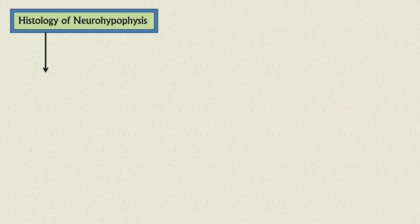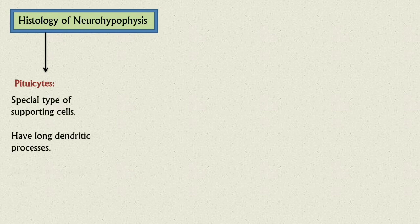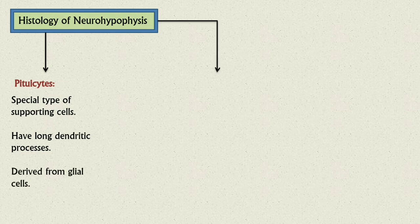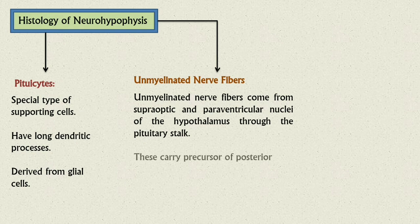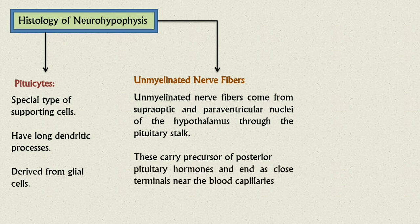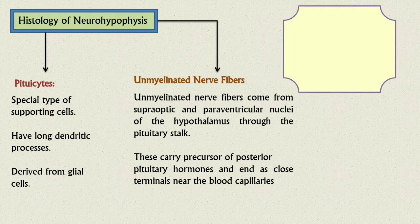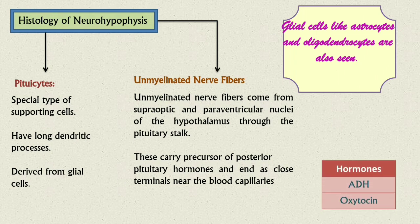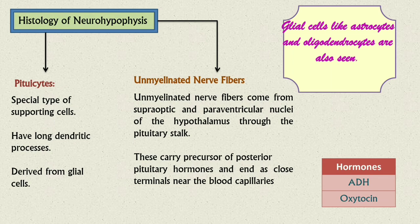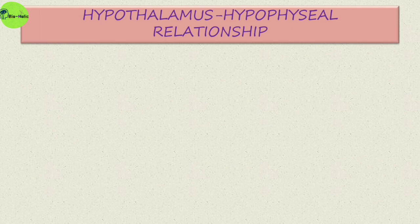Now the histological characteristics of the neurohypophysis: it consists of pituicytes, a special type of supporting cells with long dendritic processes derived from glial cells. Next are unmyelinated nerve fibers that come from the supraoptic and paraventricular nuclei of the hypothalamus through the pituitary stalk; these carry precursors of posterior pituitary hormones and end as axon terminals near blood capillaries. Some glial cells like astrocytes and oligodendrocytes are also present. The hormones secreted from the neurohypophysis are ADH and oxytocin.